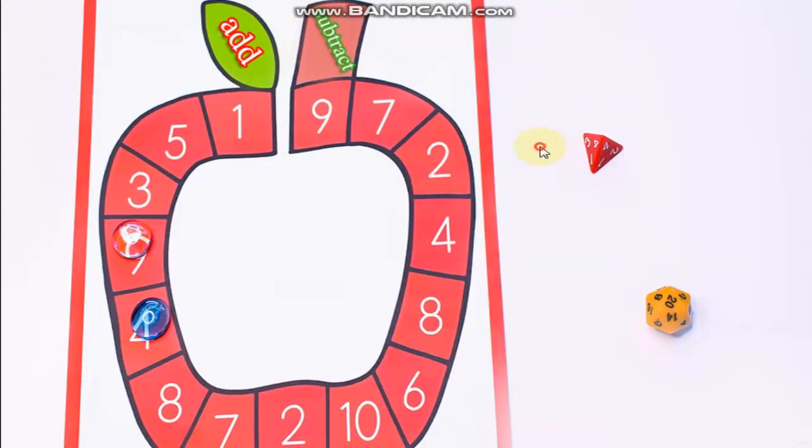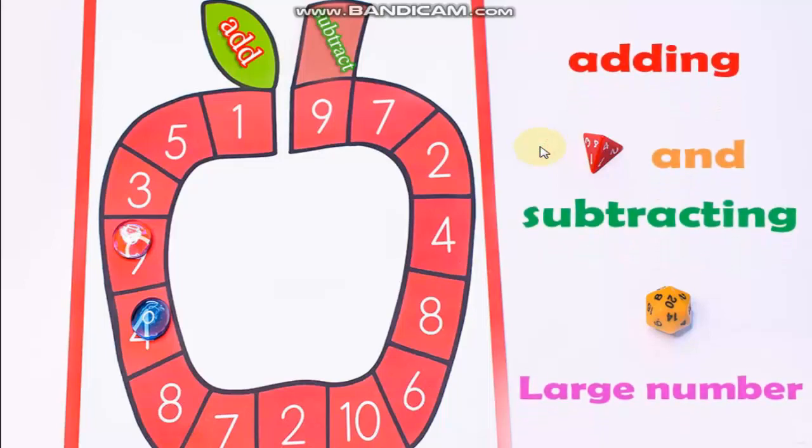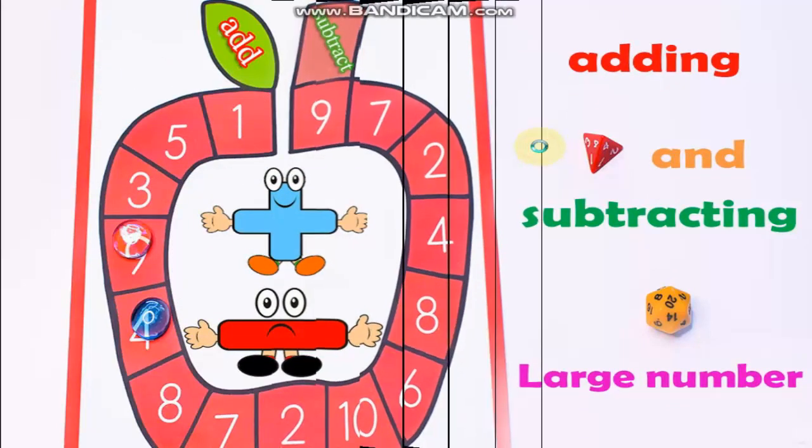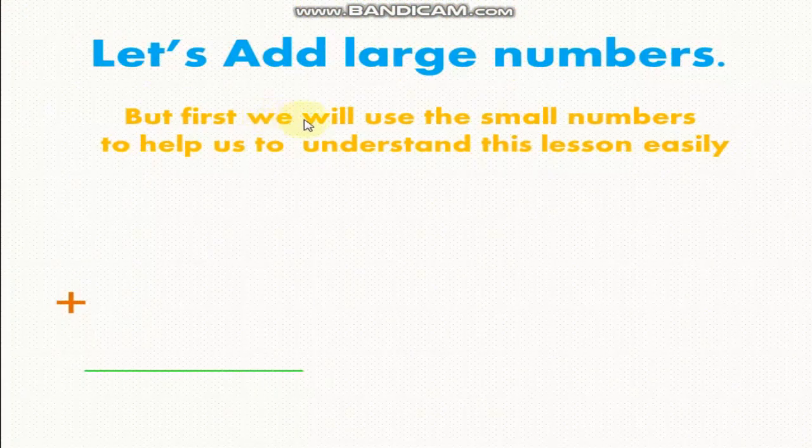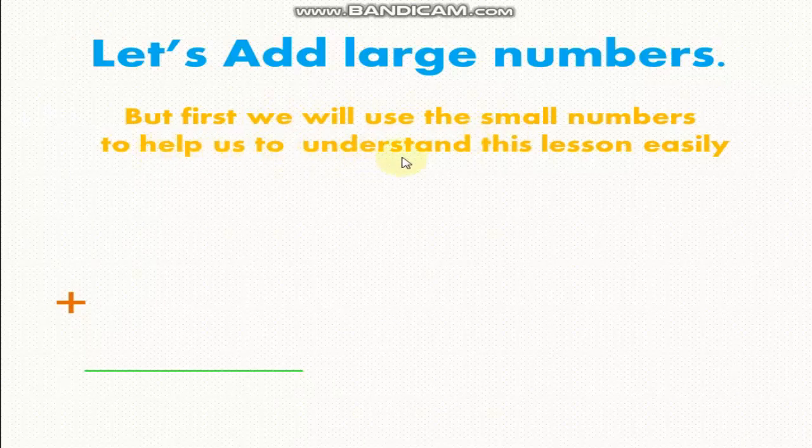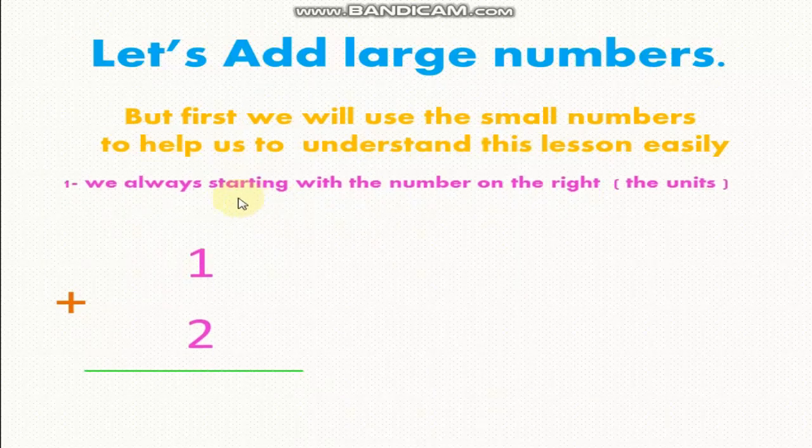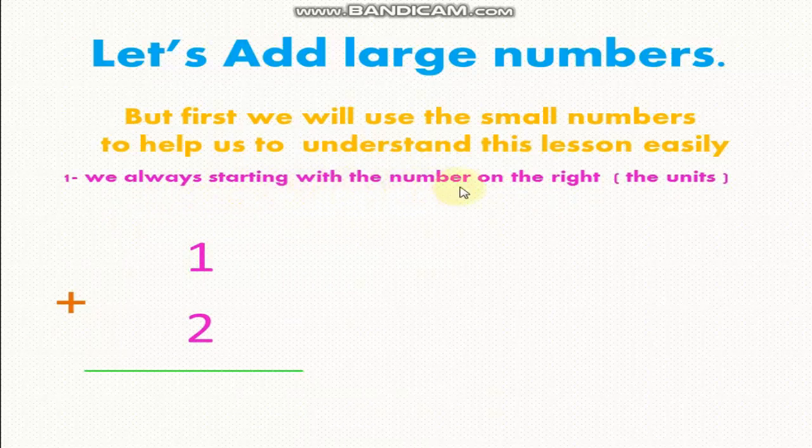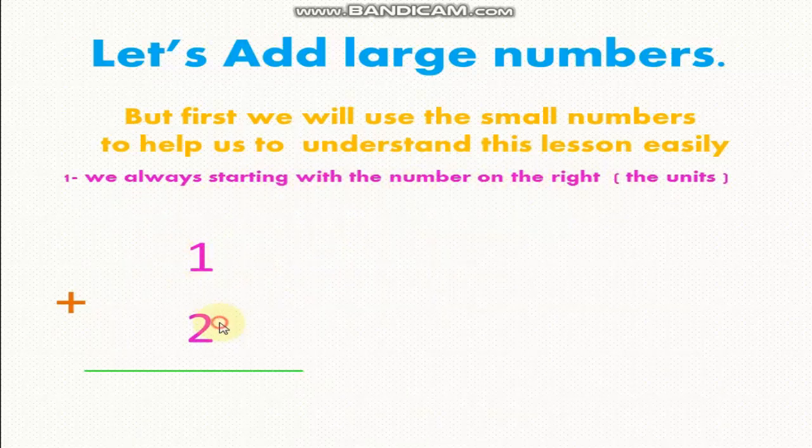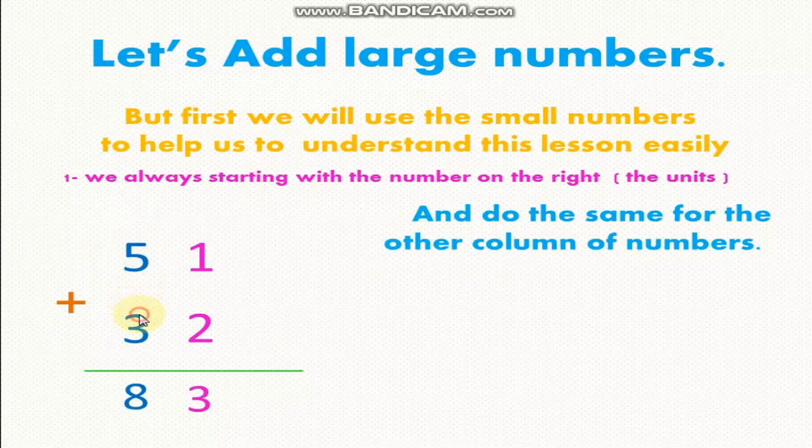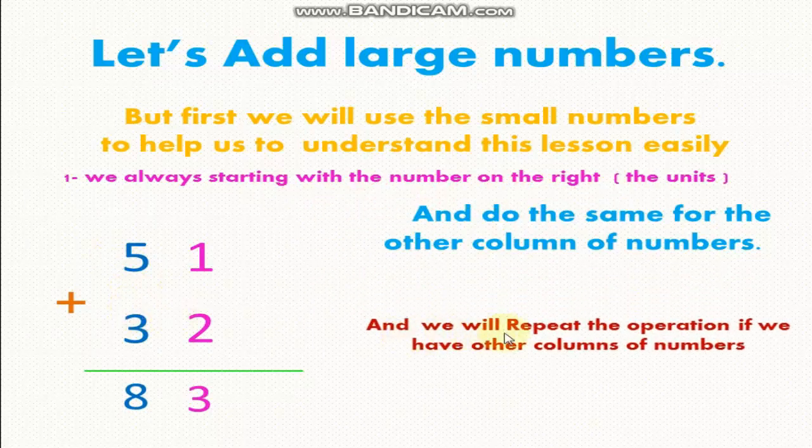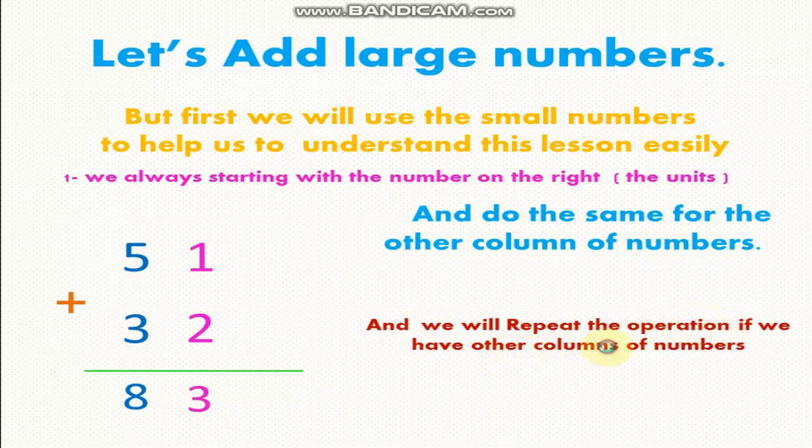Hello, how are you? Our lesson is about adding and subtracting large numbers. At first, let's add large numbers. We will use small numbers to help us understand this lesson easily. We always start with the number on the right, the units. Here, 1 plus 2 equals 3, and do the same for the other column of numbers. 5 plus 3 equals 8, and we will repeat this operation if we have other columns of numbers.